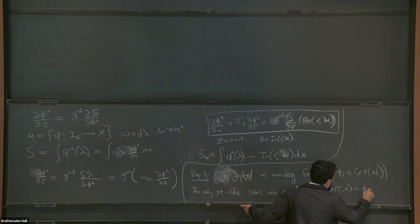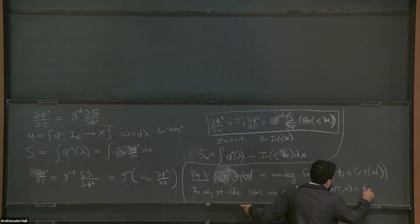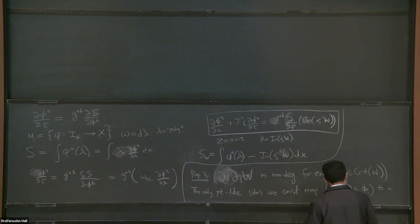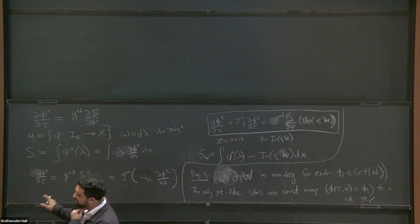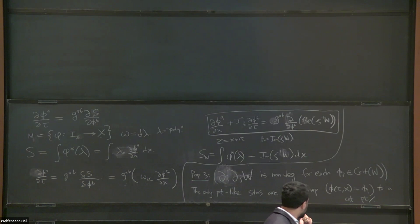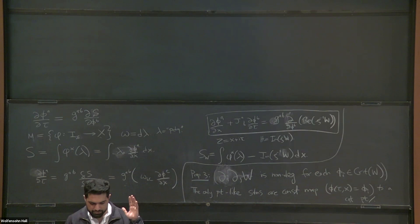Property three: constant maps to critical points are the only point-like solutions. This property, which follows from a relatively easy proof, shows that if there are any non-trivial solutions of this equation at all, they are not going to be like the standard instantons you think about. It's worth contemplating what type of things you might get.